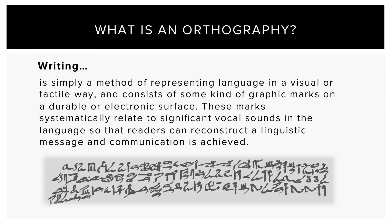Let's look at what writing actually is. Writing is simply a method of representing language in a visual or tactile way, and consists of some kind of graphic marks on a durable or an electronic surface. These marks systematically relate to significant vocal sounds in the language so that readers can reconstruct a linguistic message and communication is achieved.